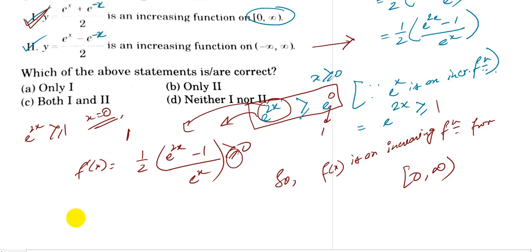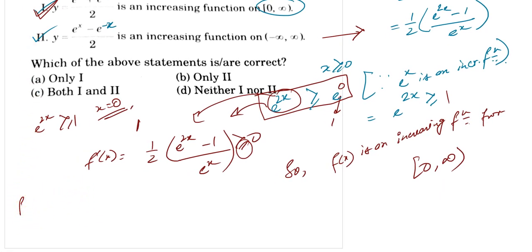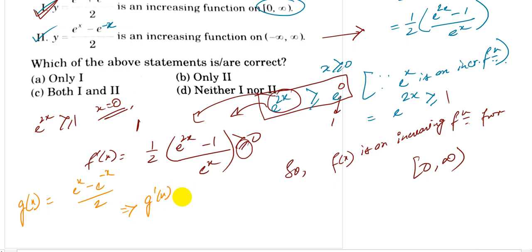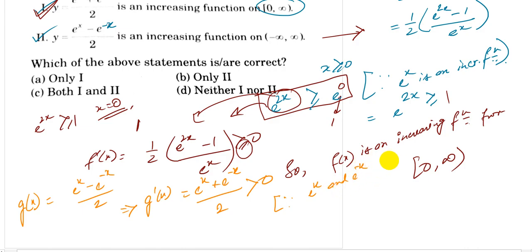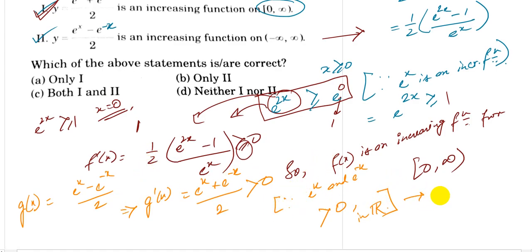Now for statement two, let g(x) equal e to the power x minus e to the power minus x, divided by 2. Then g'(x) equals e to the power x plus e to the power minus x, divided by 2. This is strictly greater than 0 because e to the power x and e to the power minus x are both greater than 0 for all x in ℝ. Therefore g(x) is an increasing function on ℝ.